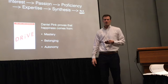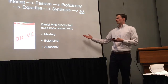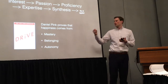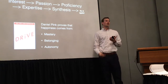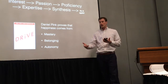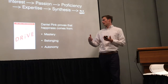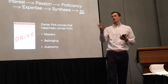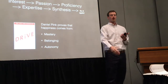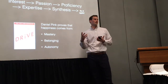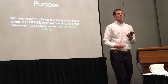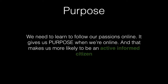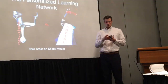This has been mentioned many times today, so I had to put this slide in. This fits perfectly with Daniel Pink's Drive — where happiness comes from: mastery, belonging, autonomy. You have autonomy because you chose what you wanted to learn. You get mastery because you're learning about it all the time, in real time. And belonging — social network spaces are wonderful places to collaborate, work with others, and show off what you know. Most of all, it gives them purpose when they're online, and that makes us more likely to be an active informed citizen.